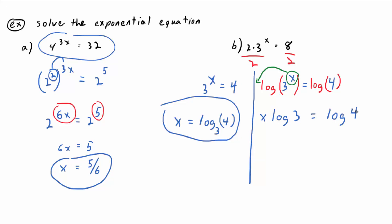But now, what is multiplication here? This operation between the x and the log of 3. So how can I get x by itself? I can divide both sides by log of 3. And then it goes away here, and I have another answer. x equals log of 4 divided by log of 3.